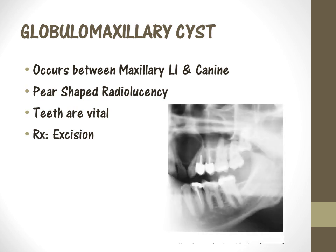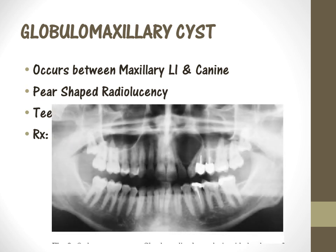Next is the globulomaxillary cyst. This cyst usually occurs between the maxillary lateral incisor and canine. This cyst is pear-shaped. All of the teeth are vital, and the adequate treatment is excision of the cyst.